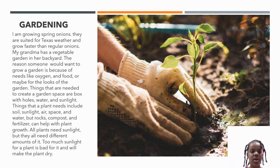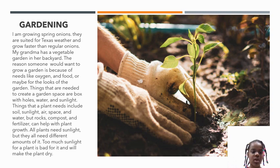My grandma has a vegetable garden in her backyard. The reason somebody would want to grow a garden is because of needs like oxygen and food, or maybe for the looks of the garden. Things that are needed to create a garden space are a box with holes, water, and sunlight.